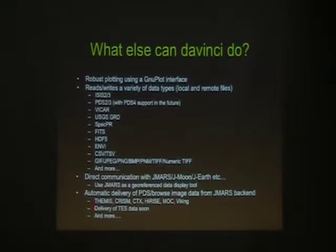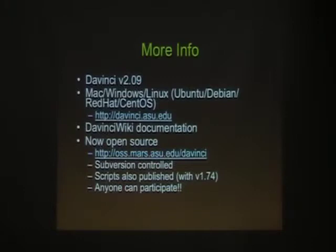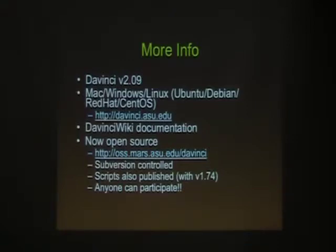Something new coming in probably within the next year is the delivery of TESS data, which is notoriously hard to get in raw form. Most people who use TESS data use binned or gridded products and not the actual individual spectra outside of the TESS-based teams. DaVinci is currently on version 2.09. It runs on Mac, Windows, and Linux, and we support a lot of different Linux distributions. We have a full documentation suite. It's also open source, so if you want to contribute you're more than welcome. We actually have our first real outside contributor outside the building, who is going to contribute about 100 functions.